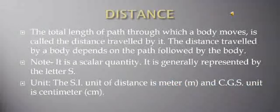Distance: the total length of the path through which a body moves is called the distance traveled by it. The distance traveled depends on the path followed by the body. Distance is a scalar quantity — it has only magnitude, no direction. It is generally represented by the capital letter S. The SI unit of distance is meter (m) and the CGS unit is centimeter (cm).